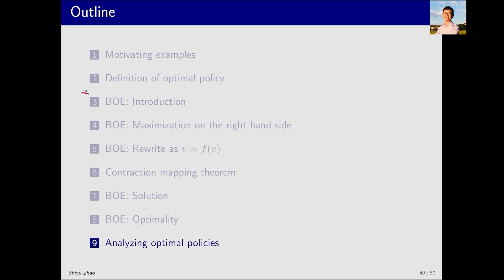Up to this point, we have finished the introduction of the Bellman optimality equation, which provides a powerful tool to analyze the optimal policy and the optimal state value. Now let's apply this tool to analyze optimal policies and their interesting properties.